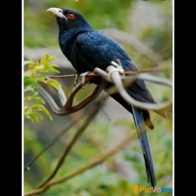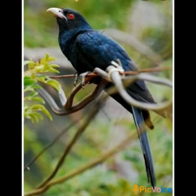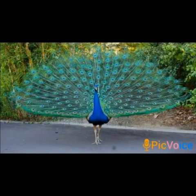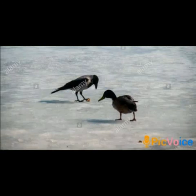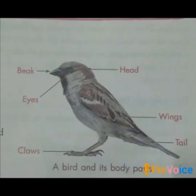Some of the common birds are quail, peacock, duck, crow, etc. Moving on to the body parts of a bird: it consists of a head, a beak, wings, feathers, claws, and a tail.